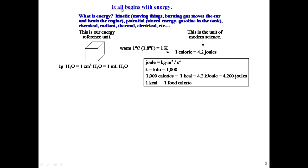It begins with energy. What is energy? We have kinetic energy, which is moving things — think of burning gas that moves the car and heats the engine, so you get work and heat. Or you have potential energy stored in gasoline in the tank and in the chemical bonds. Energy can be chemical energy, radiant energy, thermal, electrical, and so forth.